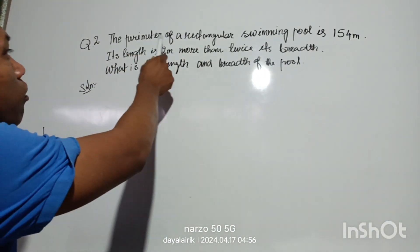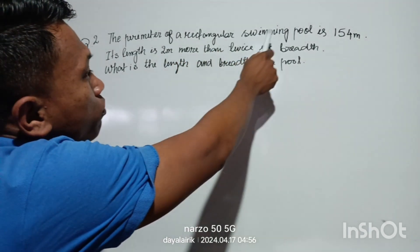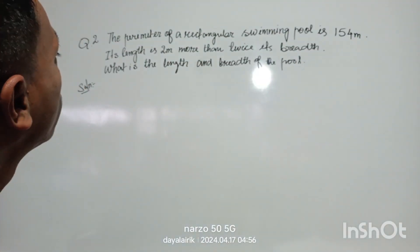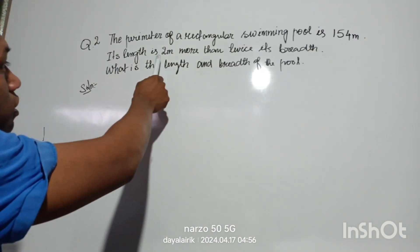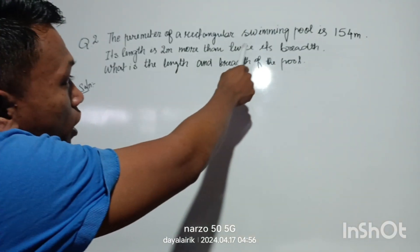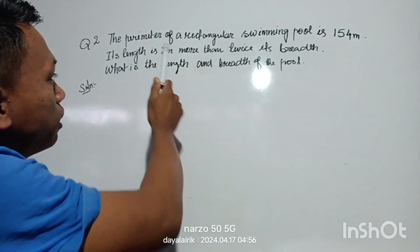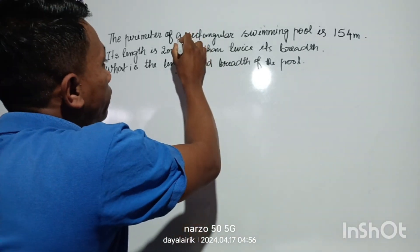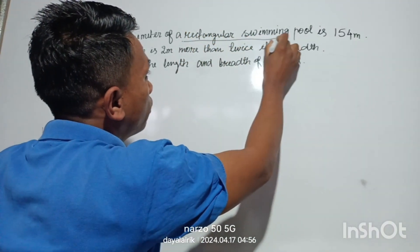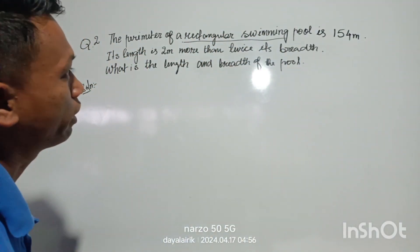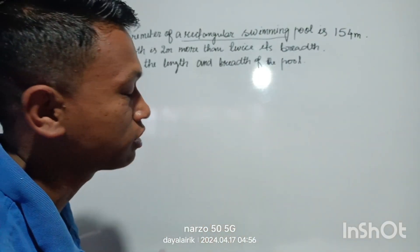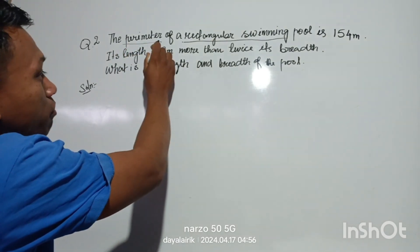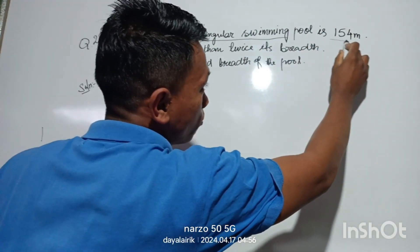The perimeter of a rectangular swimming pool is 154 meters. Each length is 2 meters more than twice its breadth. What is the length and breadth of the pool? The swimming pool is a rectangle shape with a perimeter of 154 meters.